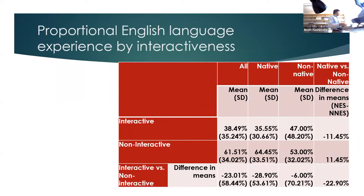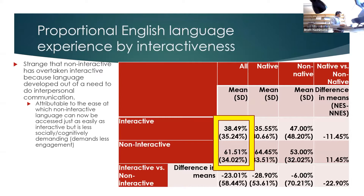Breaking the results down by interactiveness — whether there was an interlocutor present, including technology-mediated communication such as texts or emails as interactive versus non-interactive language like reading a textbook alone — it's somewhat surprising that non-interactive language has overtaken interactive language. Language historically and developmentally evolved out of a need for interpersonal communication, so it's interesting that non-interactive language is used more than interactive language.